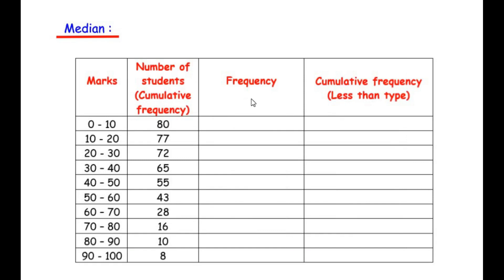Now the table we consider has marks in grouped data format. The number of students given in the question was actually the cumulative frequency, because it started with the total and accumulated all the data down to 80. So we need to find the actual frequency — how many students scored between 0 and 10, between 10 and 20, and so on. We will also find the less-than type cumulative frequency as a final column.